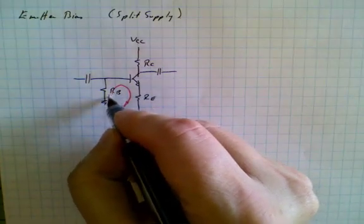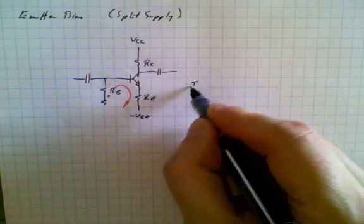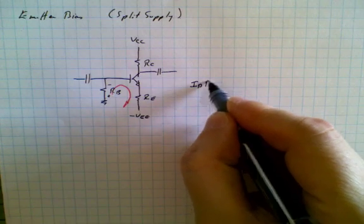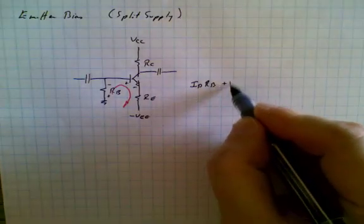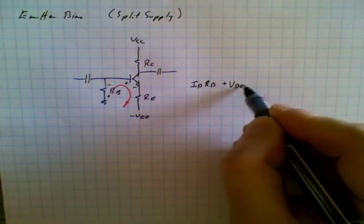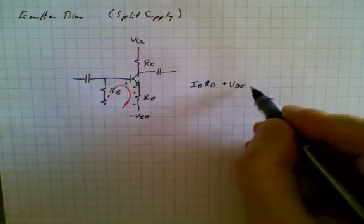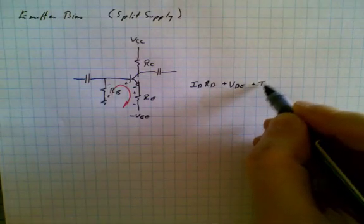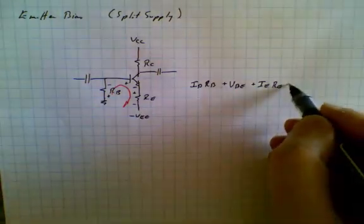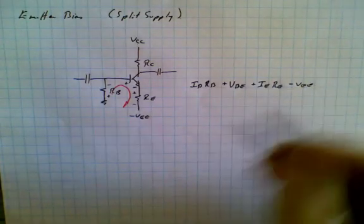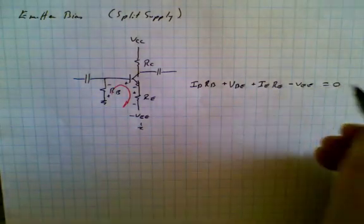Starting off from ground, we see that the voltage drop across the base resistor is simply Ib times Rb. Then we have the drop across the base-emitter junction, voltage VBE. And then we have the drop across the emitter resistor, so it's plus Ie times Re. And then we have minus VEE that goes to ground, and so all of that adds up to zero.